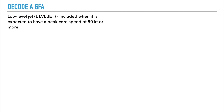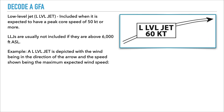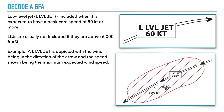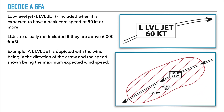A low level jet is included when it is expected to have a peak core speed of 50 knots or greater. Low level jets are not usually included if they are above 6,000 feet ASL. In the first example, you can see the jet is moving northeast bound with a speed of 60 knots.